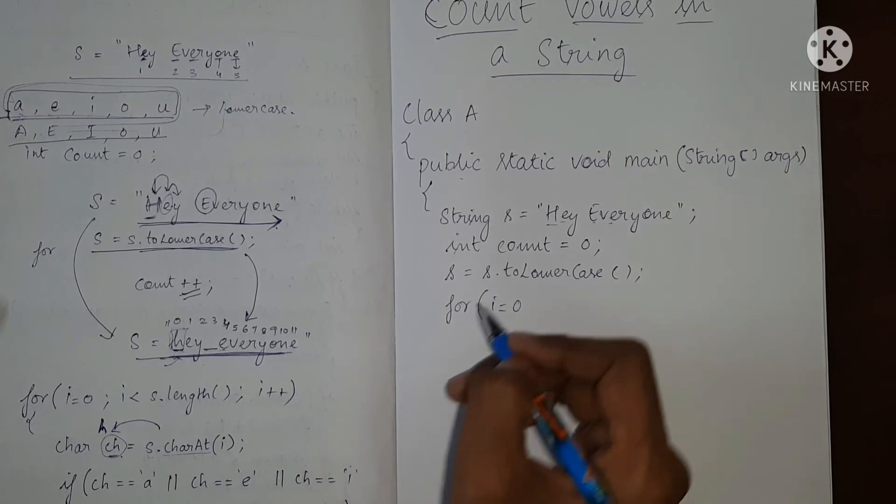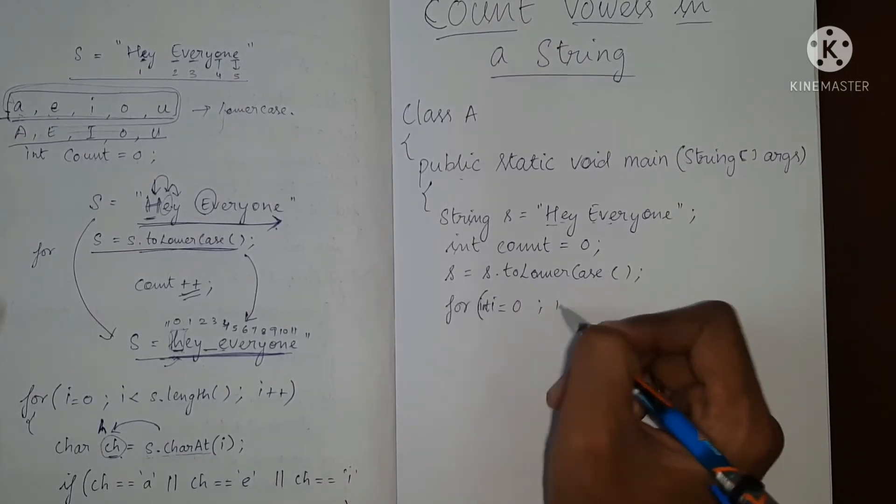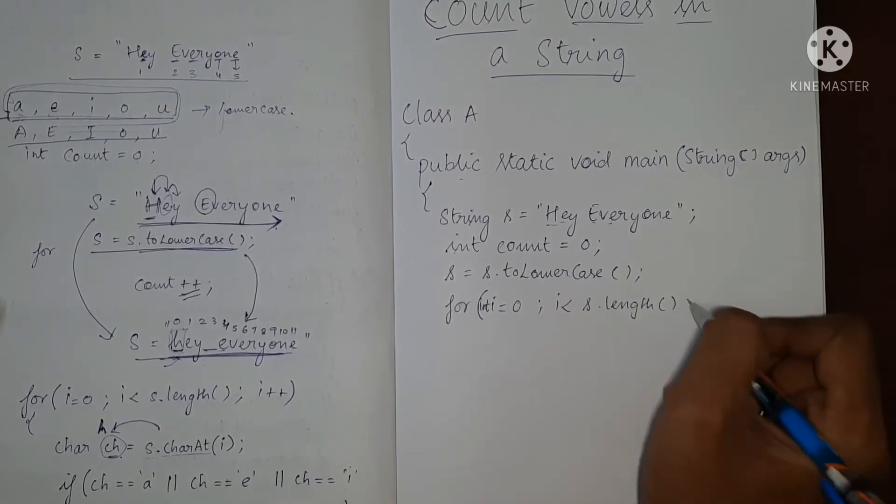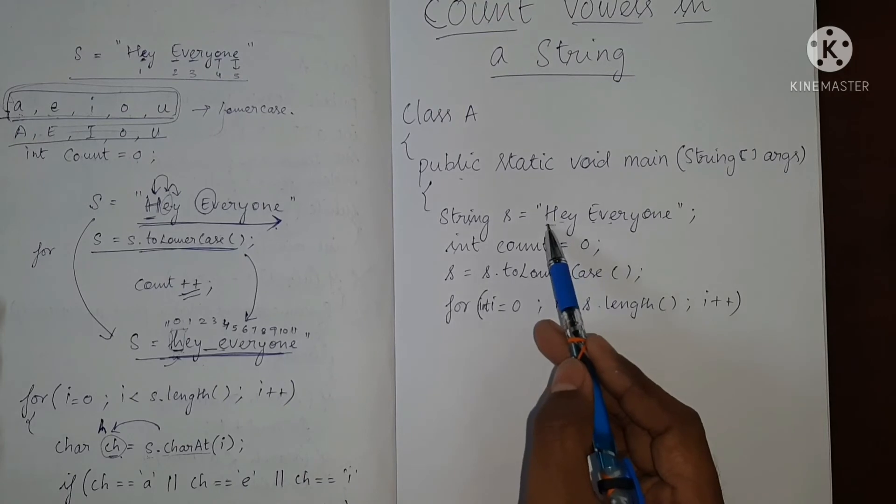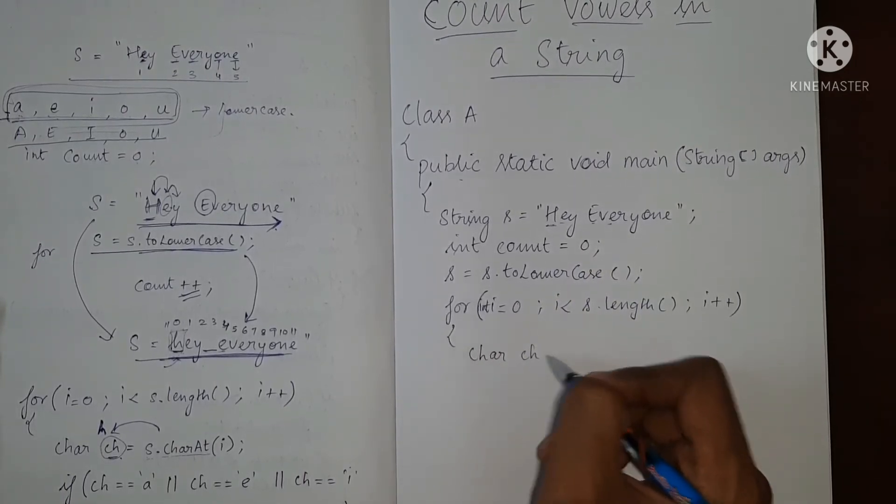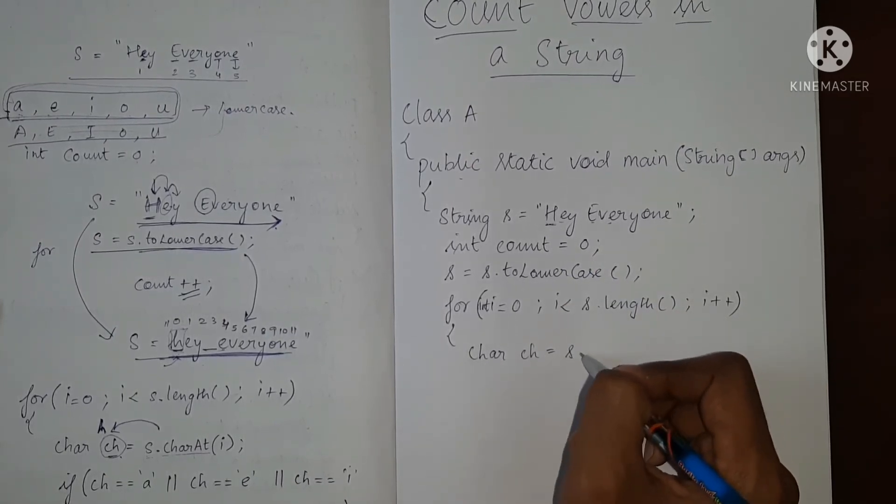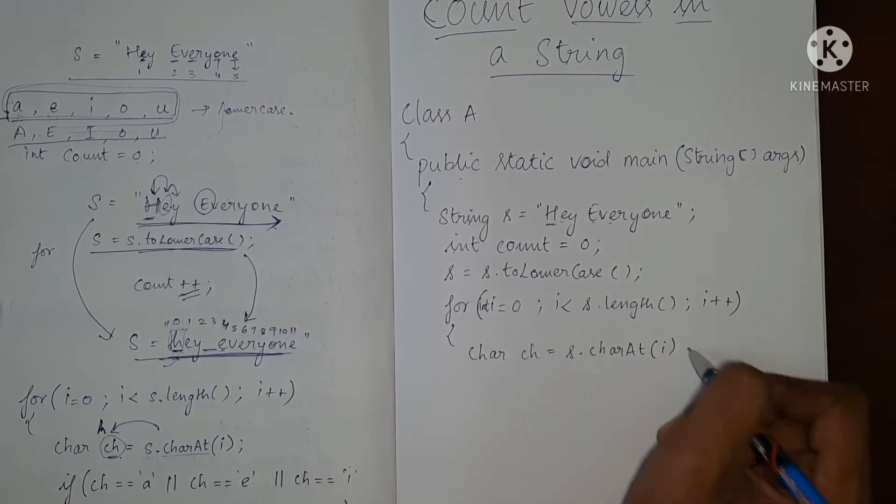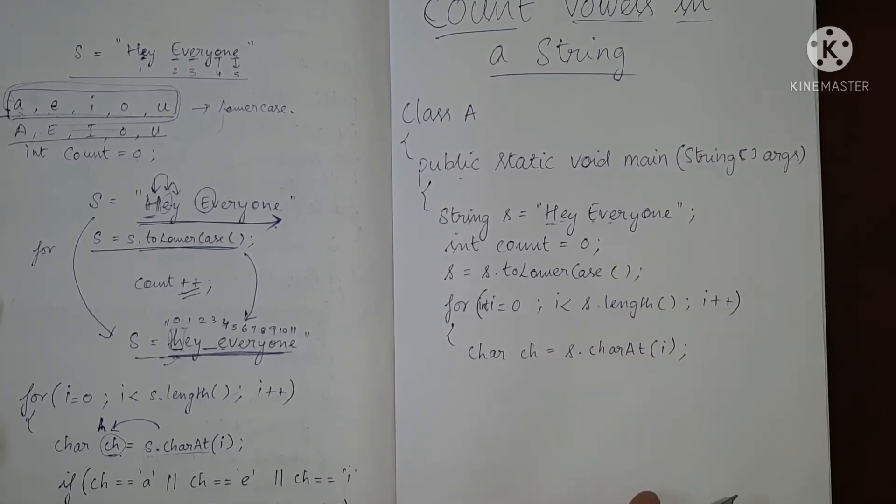I starts from zero. So this is integer I equal to zero. I less than S dot length I plus plus. Now we are going to take each character and we are going to store it in a variable of type char. So yes, we are going to take one character and store it over here. Let's say S dot character at index number I. So we are going to take each character at each iteration.